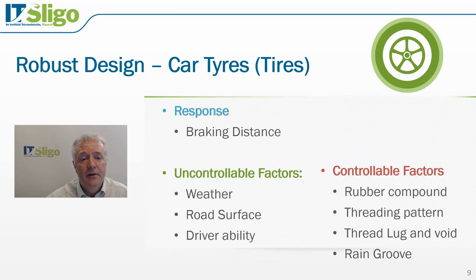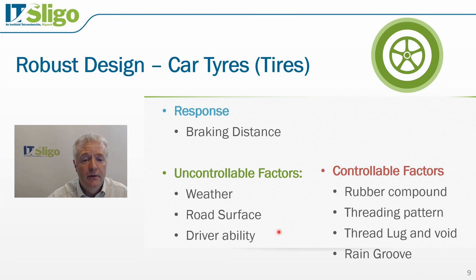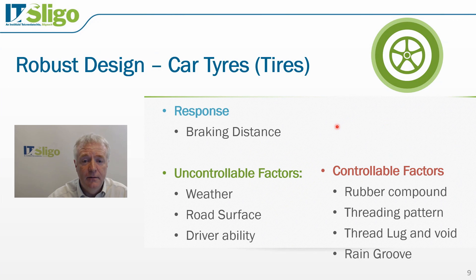Let's take the example of tires on our car. The response is the braking distance — when we hit the brake pedal, our car should come to a predictable stop, irrespective of road conditions. Uncontrollable factors include weather, road surface, driver ability, snow, and ice. The controllable factors are the rubber compound, threading pattern, tire lugs and voids, and rain grooves. In a domestic car, the controllable factors are designed to minimize the influence of uncontrollable factors, making braking distance predictable regardless of road surface.